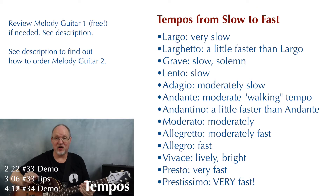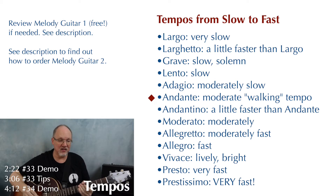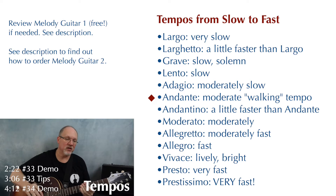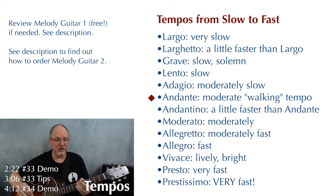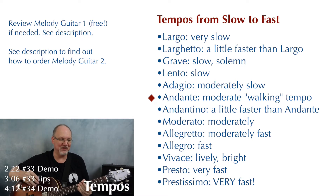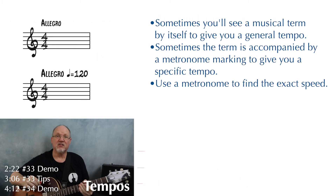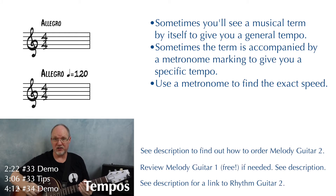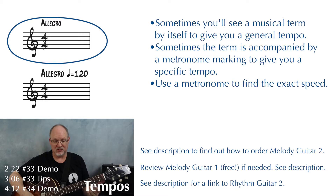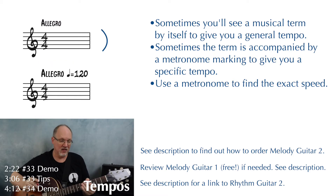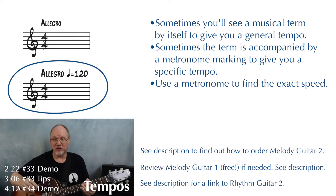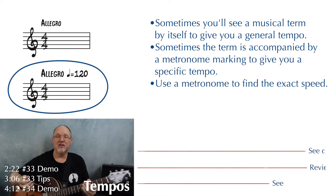You don't have to memorize all of these right away, but I will go over some of the more common ones. Andante is very common — moderate walking tempo, can also be thought of as moderately slow, even though Adagio is also moderately slow. Moderato is pretty easy to figure out — nice moderate tempo. Allegro is very common — just a brisk tempo. Sometimes you'll see a musical term combined with a metronome marking. For example, at the bottom of the page it says Allegro, which is generally fast, combined with quarter equals 120. So now we know exactly how fast — 120 beats per minute — which you can find using a metronome.